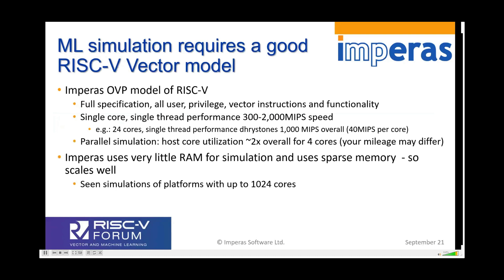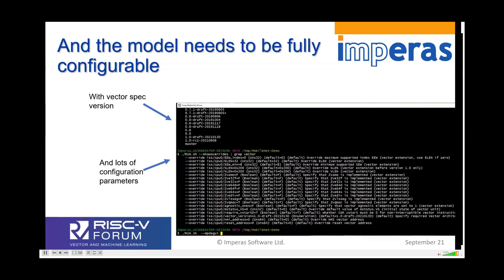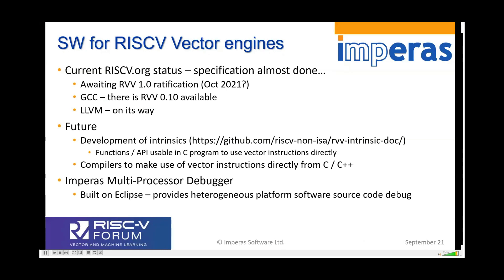Now let's talk about RISC-V vector accelerators. One key thing about machine learning is it requires a very good engine to run on, and you need a really good model of that engine. The RISC-V vector model from OVP is highly configurable, runs very fast, and uses very little memory so you can simulate large systems. There are many configuration options — the vector specification version, vector length, and other settings. The RISC-V vector specification is almost complete and expected to be ratified this month or next. GCC and LLVM tools are on the way, along with intrinsics to run vector instructions from C programs and vectorizing compilers.